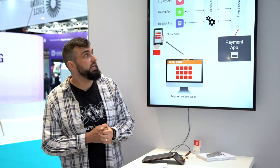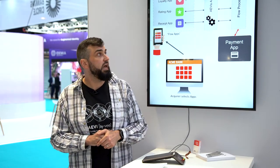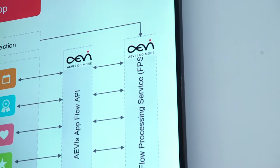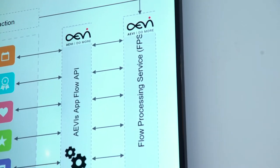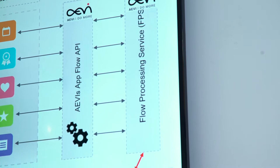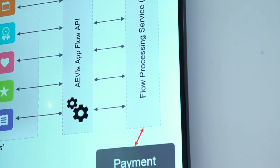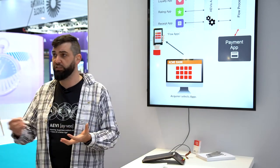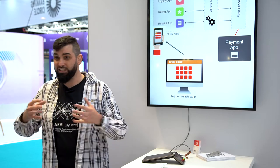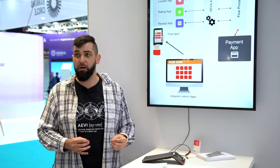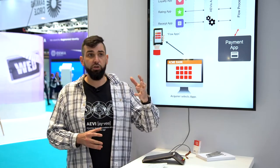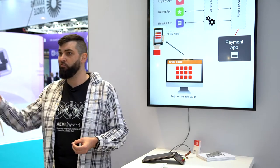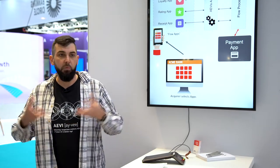Once the flow has started, it gets taken over by a thing called the flow processing service — that's AV's service which manages everything going on on the device. Then each application on the device can talk to the flow processing service using an open set of APIs called the AV AppFlow APIs. What that means is that all of a sudden, all of the applications on this device are speaking the same language, talking through the same APIs to the same piece of equipment. Essentially, any app can talk to any app — so if you want to use POS App A with loyalty app C, or POS App B with warranty and financing app F, absolutely no problem.